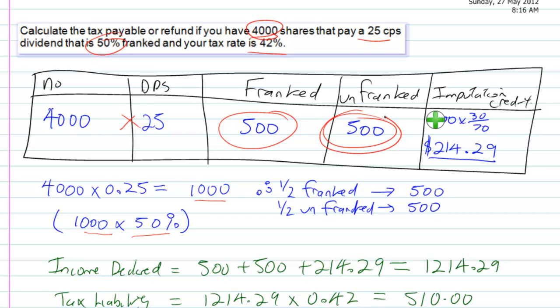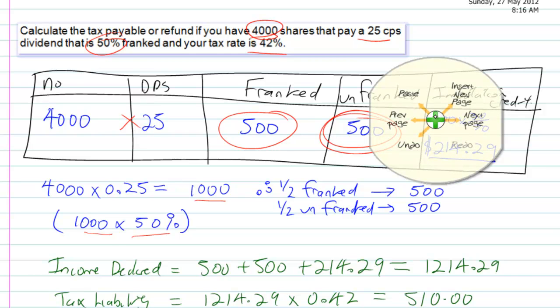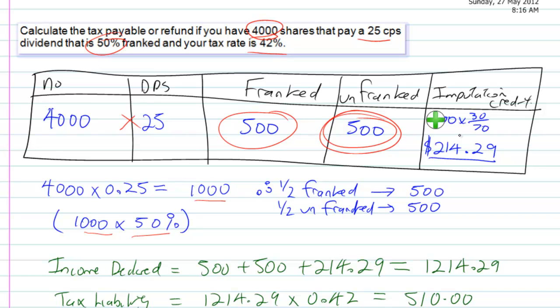So this bit here, this unfranked here, no tax gets paid on that at all by the company. But over here, this one does, so we can get, over here we have 500 times by 30 over 70 equals $214.29. So that's 500 times by 30 over 70. So it's whatever's in this franking box here, it gets times in there. So nothing happens to the unfranked one. So all this bit goes to the tax man.